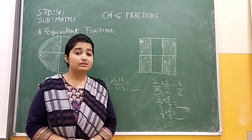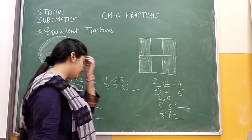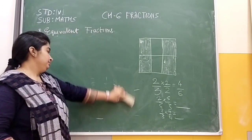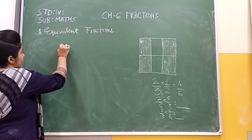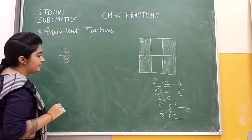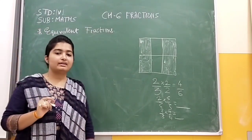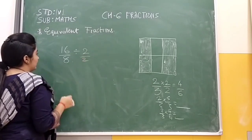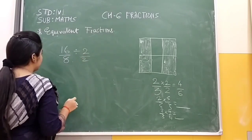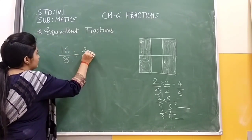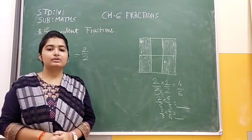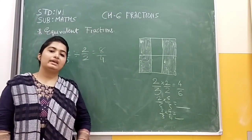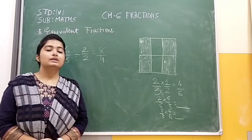Also, we can use division to get equivalent fractions. For example, I have taken the number sixteen upon eight. Now I am dividing both top and bottom by two. Sixteen divided by two is eight, and eight divided by two is four. We can say that eight upon four is the equivalent fraction of sixteen upon eight.